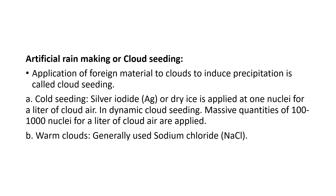The next topic is artificial rain making or cloud seeding. The application of foreign materials to clouds to induce precipitation is called cloud seeding. In cloud seeding, silver iodide or dry ice is applied at one nucleus per litre of cloud air. In dynamic cloud seeding, massive quantities of 100 to 1000 nuclei per litre of cloud air are applied. Warm clouds generally use sodium chloride.